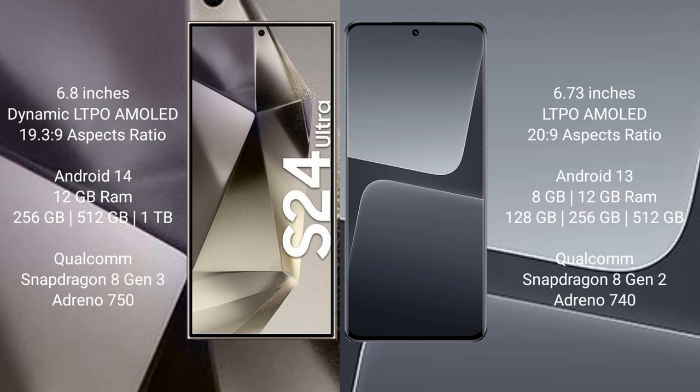Samsung Galaxy S24 Ultra comes with 12GB RAM and 256GB, 512GB, 1TB internal storage options. It features the Snapdragon 8 Gen 3 processor and Adreno 750 GPU.